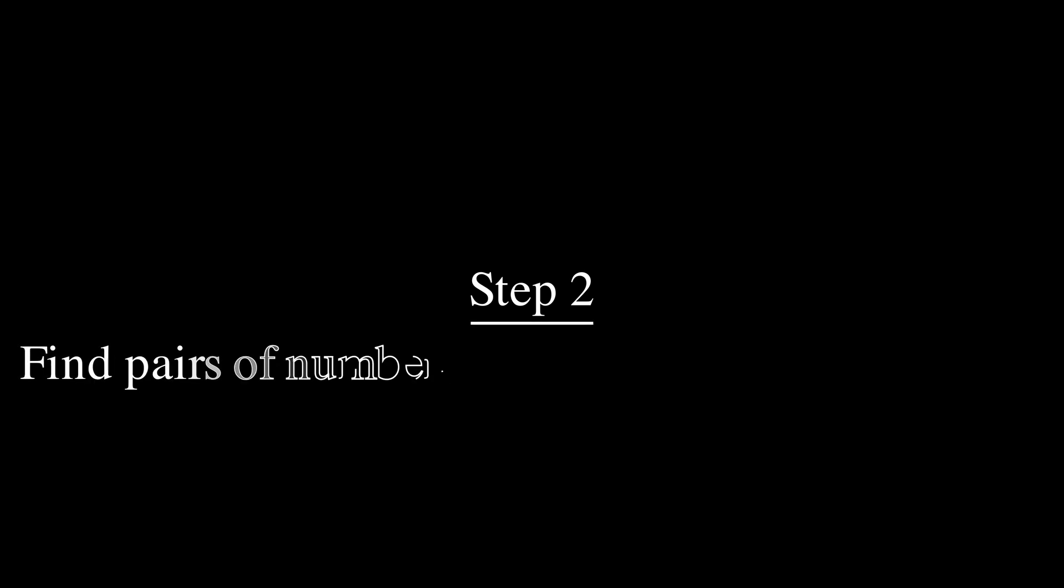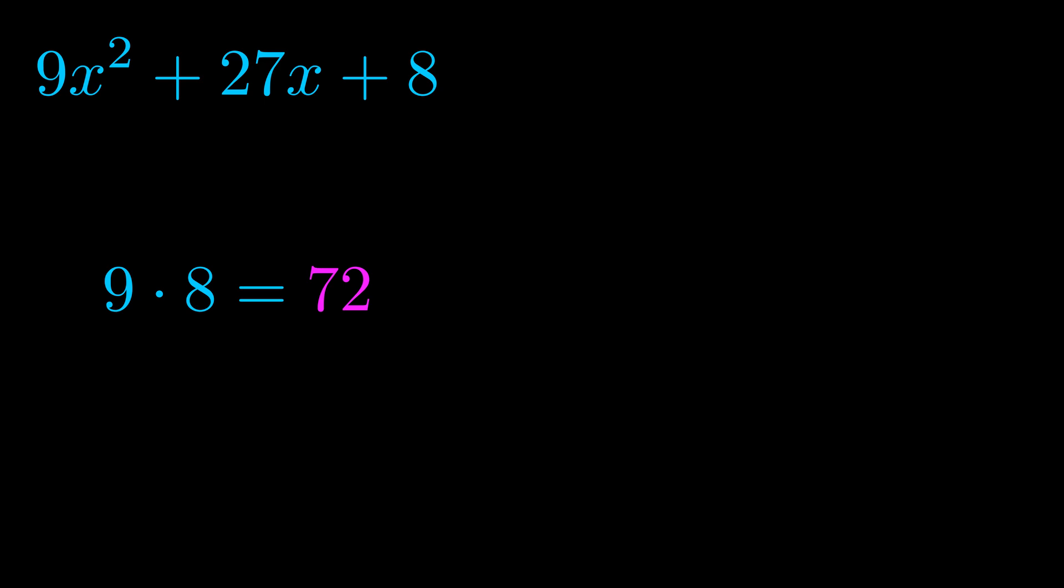Step two is to try to find all of the pairs which multiply to this number. Now it turns out you don't really need to find all of them but go ahead and write down as many numbers as you can that multiply to the magenta value for now. Pause the video and resume when you're ready to continue.